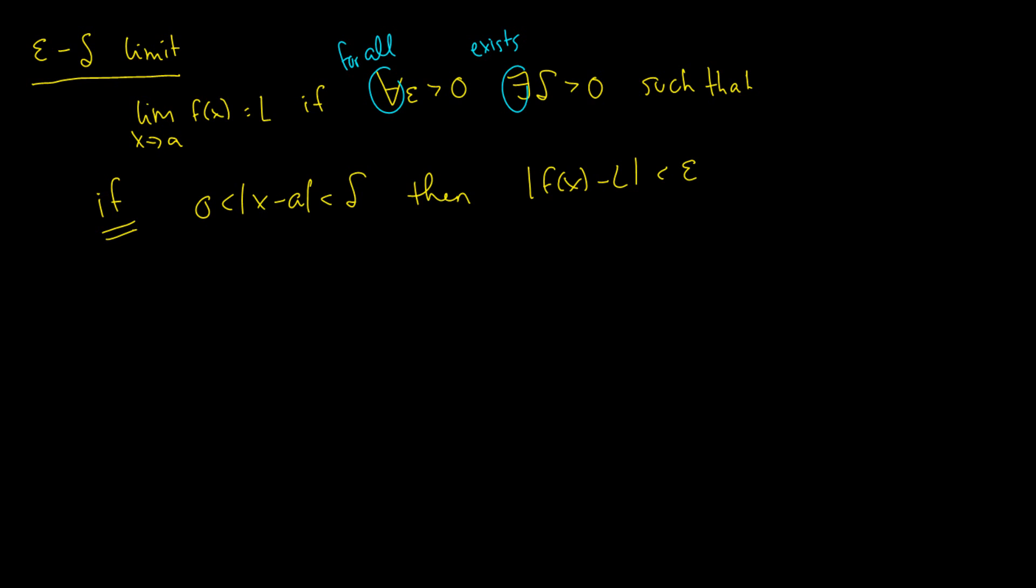All right, so graphically, what does this mean? This means if we have some function, let's do a function like this, and we pick a point A, and we know that the limit is right here. So, we're going to pick a limit that we know, because we know this exists.